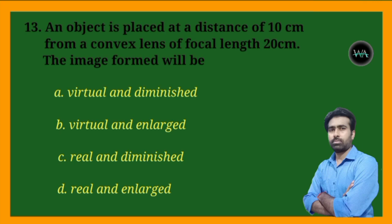Next question: an object is placed at a distance of 10 cm from a convex lens of focal length 20 cm. The image formed will be — virtual and diminished, virtual and enlarged, real and diminished, or real and enlarged?